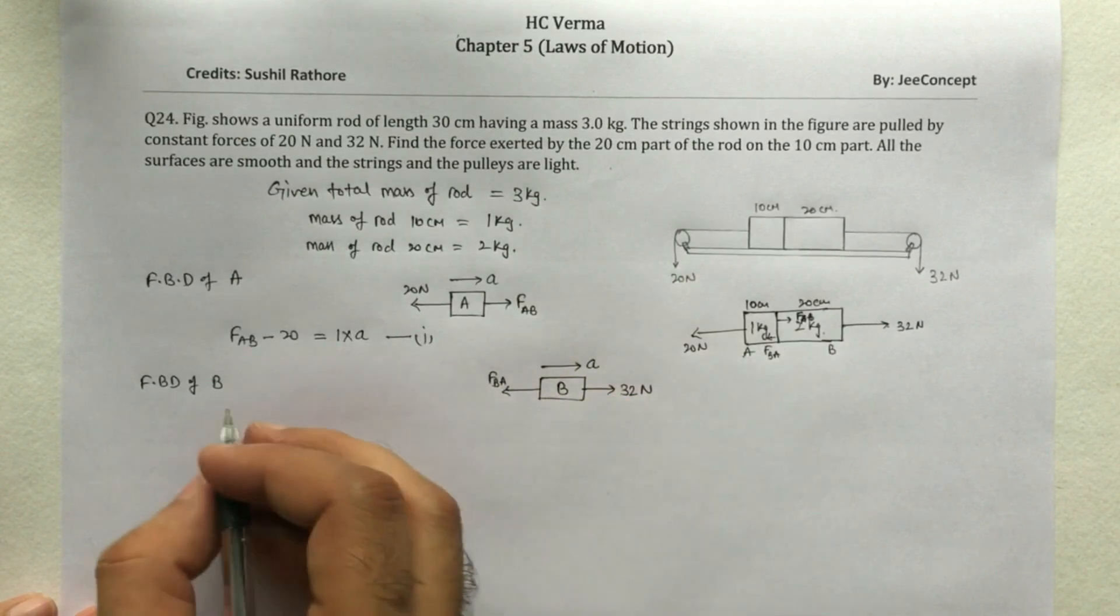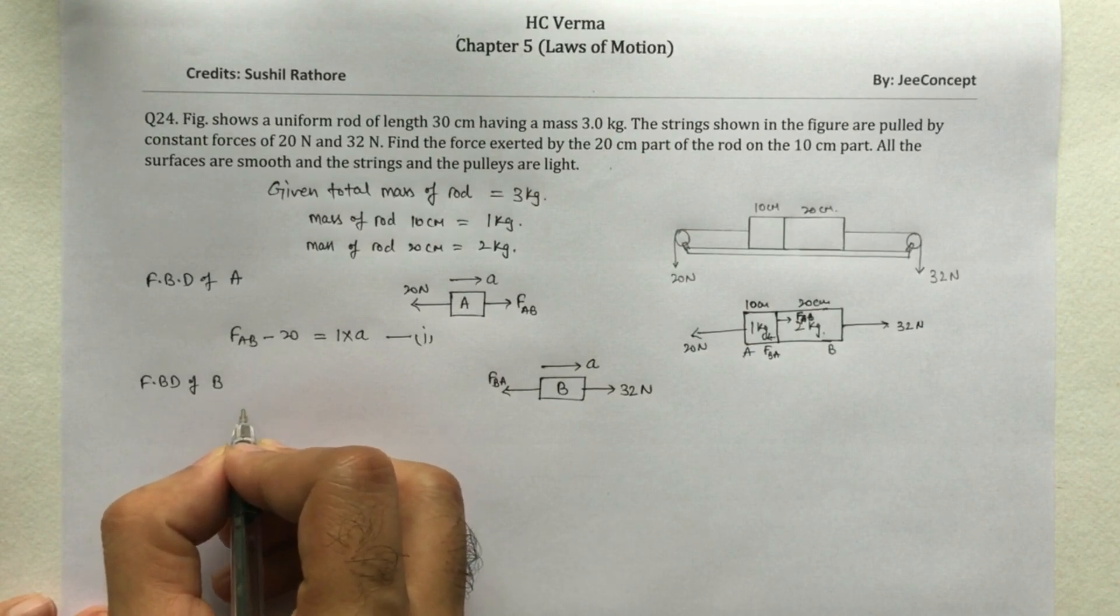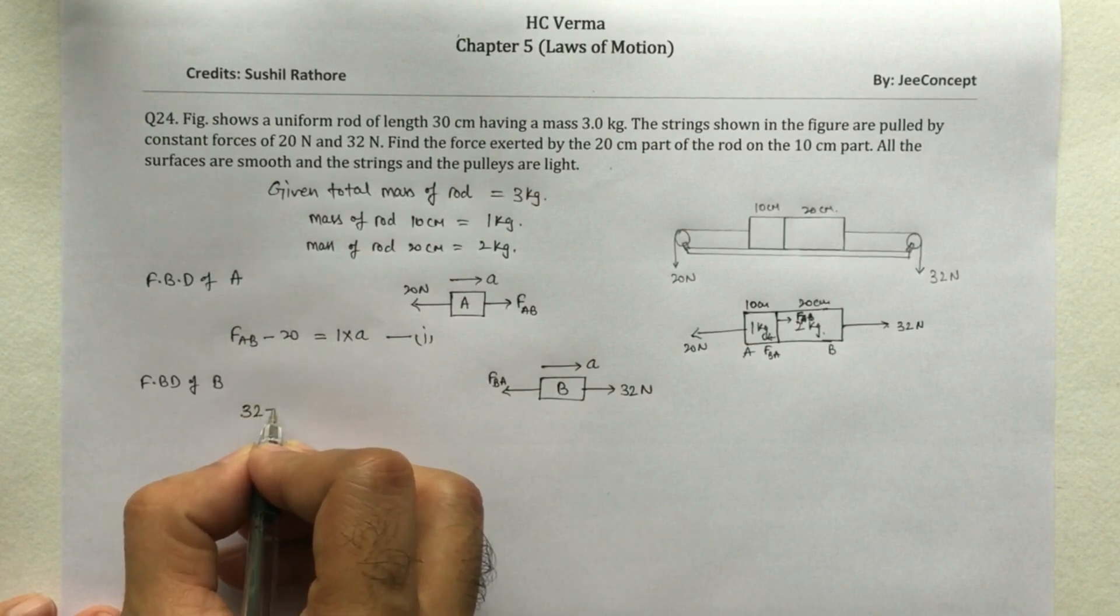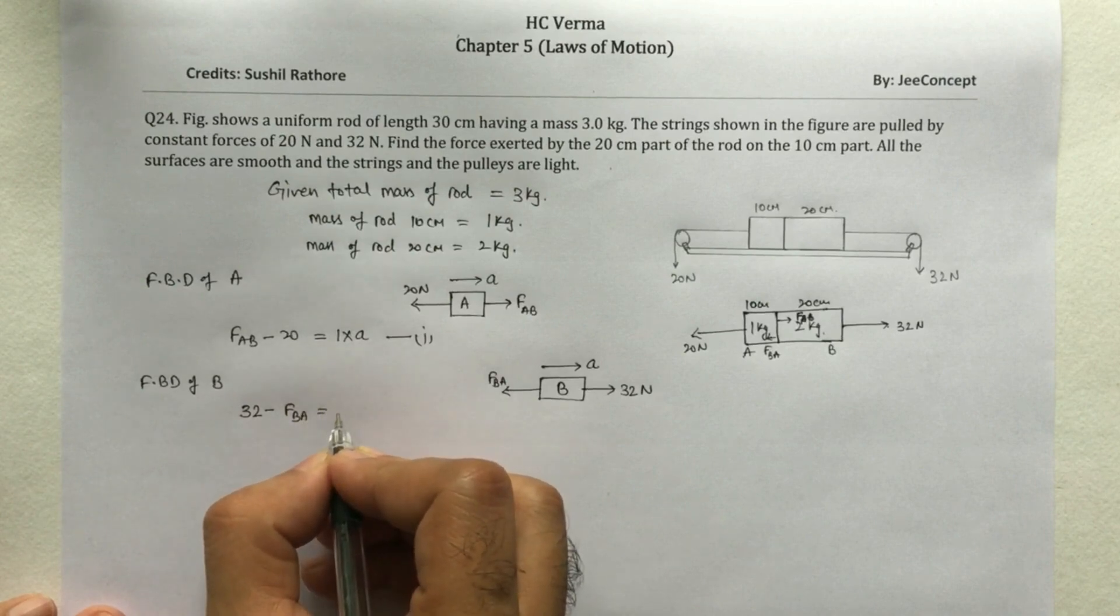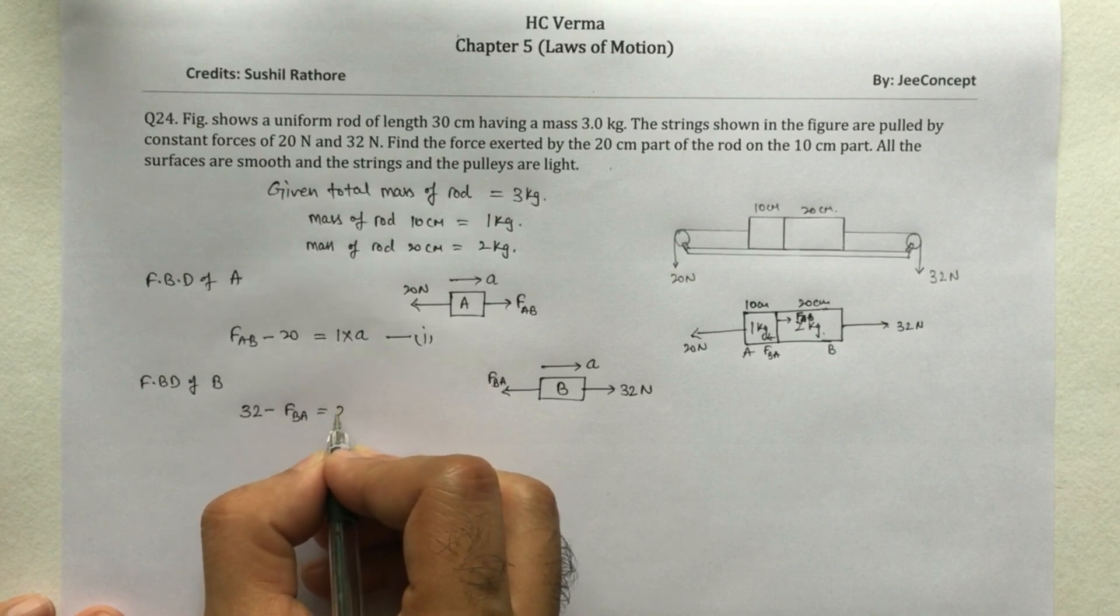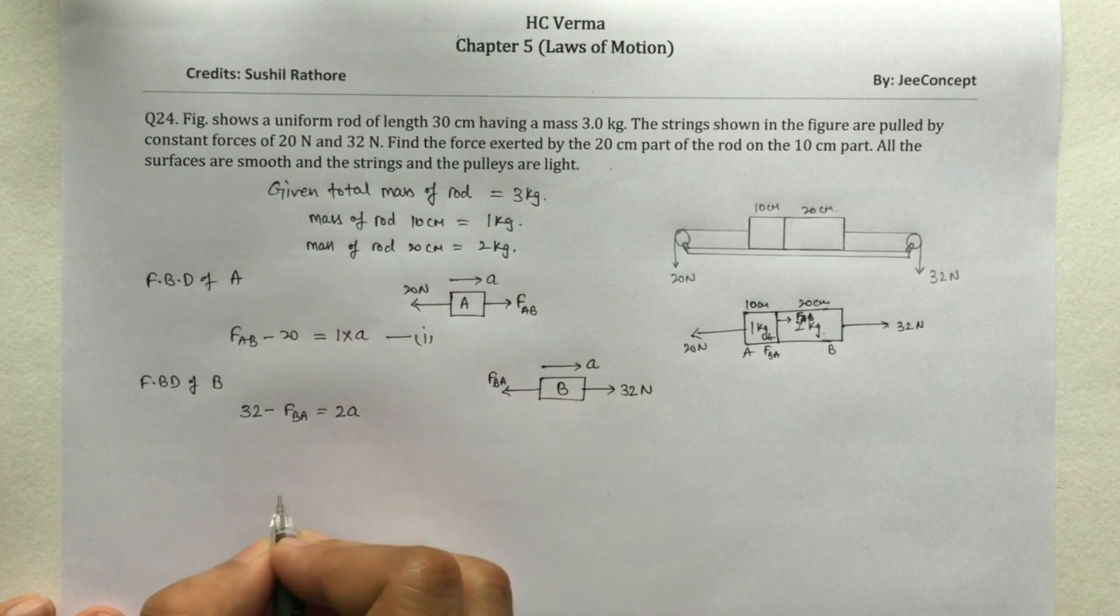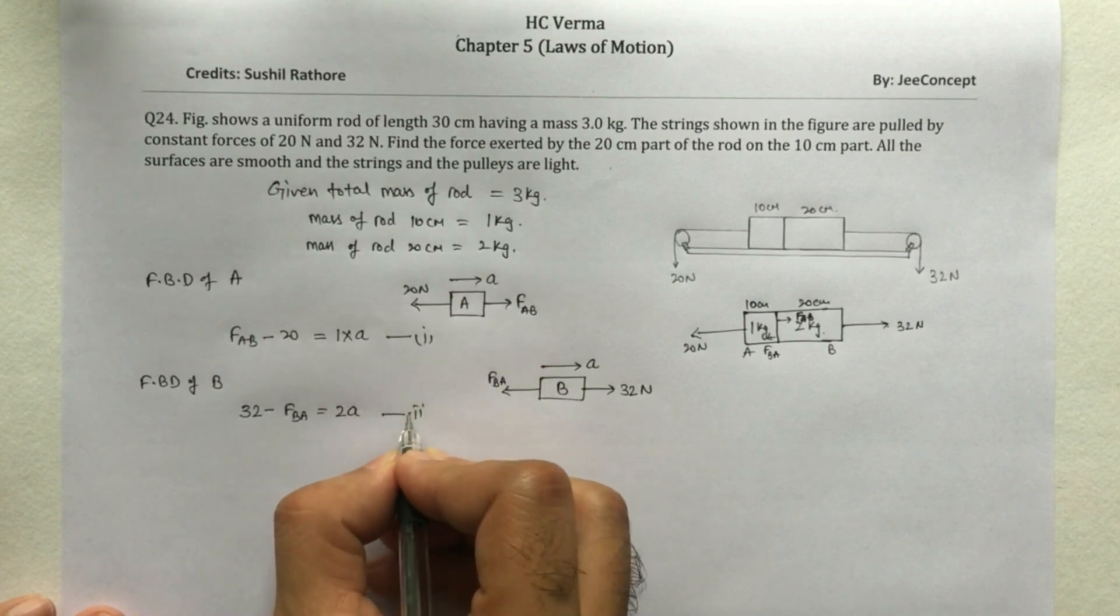and the box is moving with an acceleration of A in the right hand direction. So in that case, the equation is 32 minus FBA equals mass is 2 into A. So this is equation number 2.